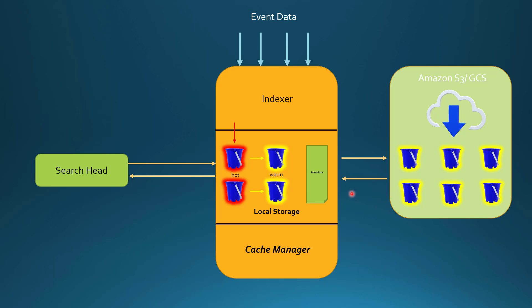You can enable Smart Store at the index level — you can selectively choose which indexes to enable it for, not all indexes at once. In a Smart Store enabled index, the local storage or local cache contains only three kinds of files: hot buckets; warm buckets currently participating in searches or with high likelihood of participating in future searches; and metadata files containing information about the warm buckets in remote storage. All of this is managed by the cache manager.